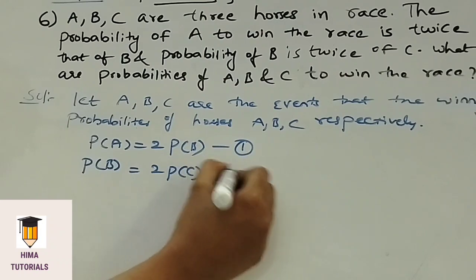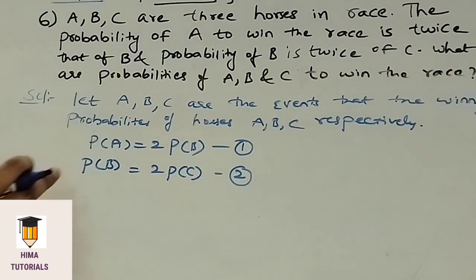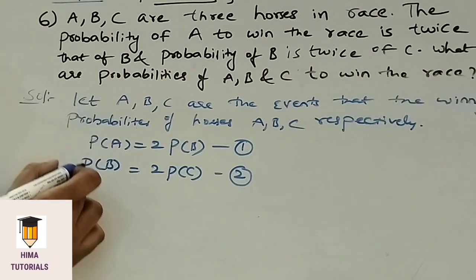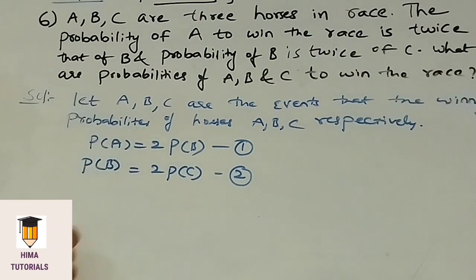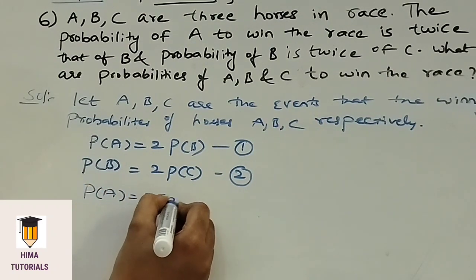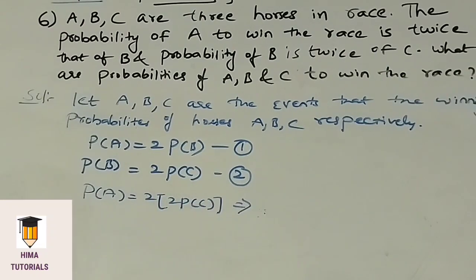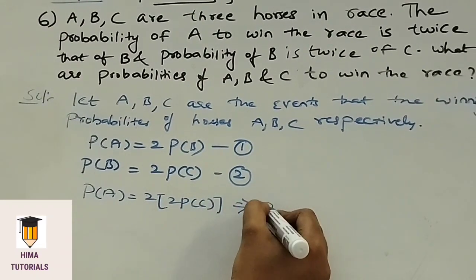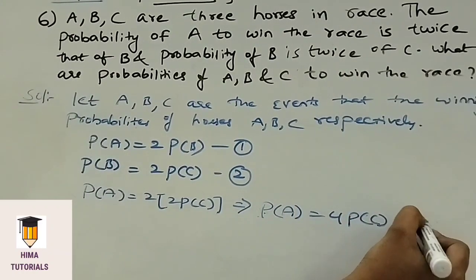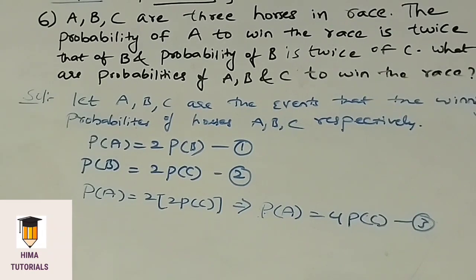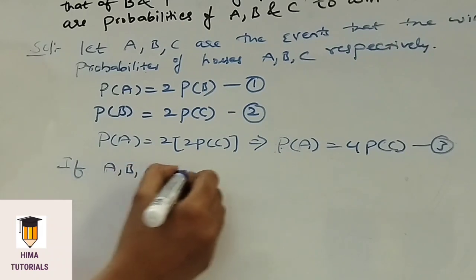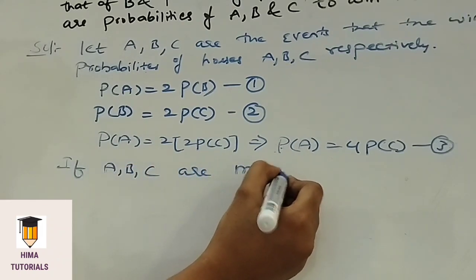Let equation 1 be P of A equals 2 times P of B, and equation 2 be P of B equals 2 times P of C. Substitute P of B in equation 1: P of A equals 2 times of 2 P of C, which gives P of A equals 4 times of P of C. Let this be equation 3. If A, B, C are mutually disjoint events, the sum of probabilities is equal to 1.